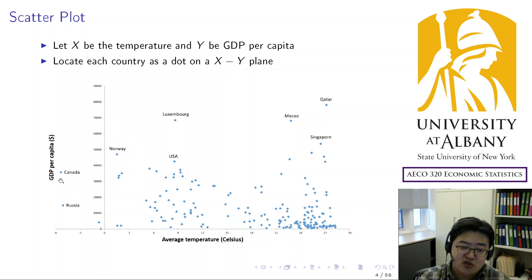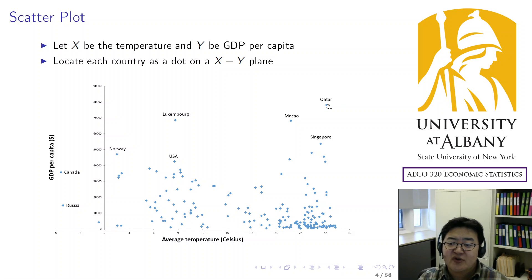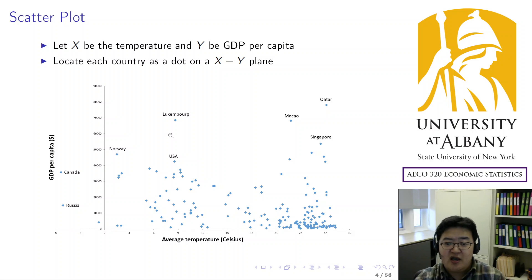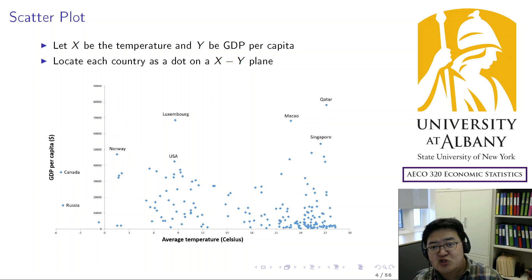Russia also has a very low average temperature. Canada's GDP is above 30,000 and Russia's is about 15,000 according to our data. Qatar has a very high average temperature and at the same time a very high GDP per capita. Luxembourg has a very high GDP per capita but an average temperature around nine degrees, similar to that of the United States. Each dot on the plot is a country, and its location is determined by its average temperature and GDP per capita.